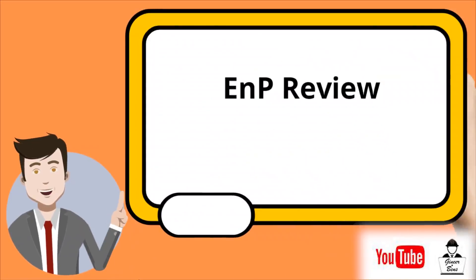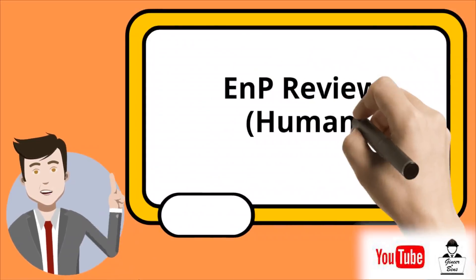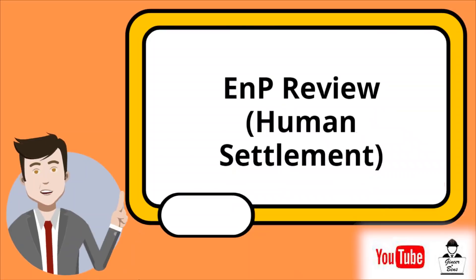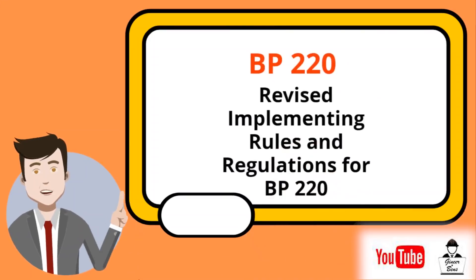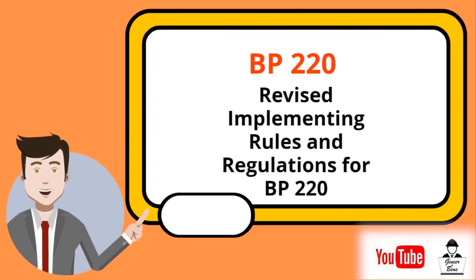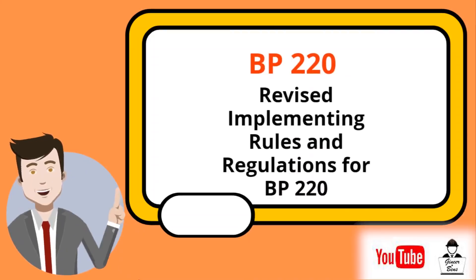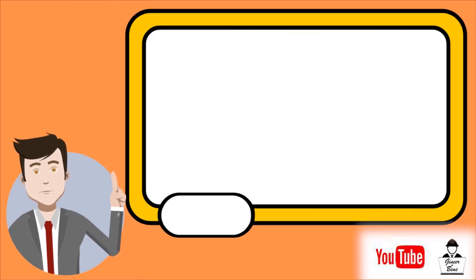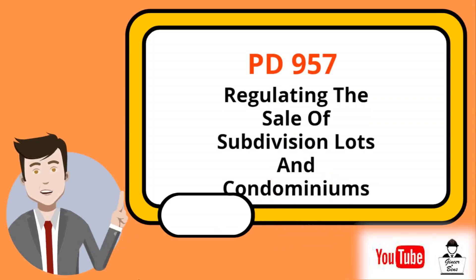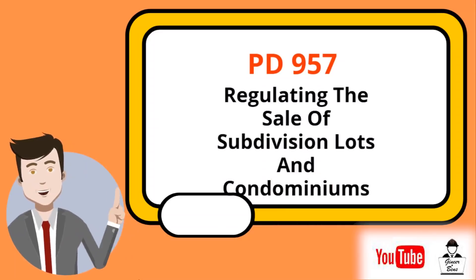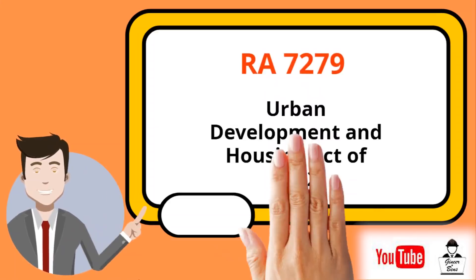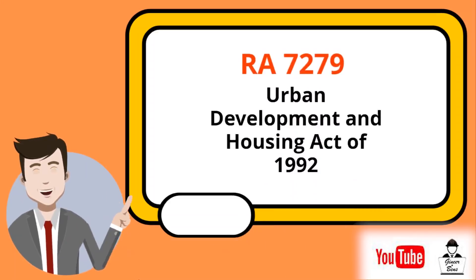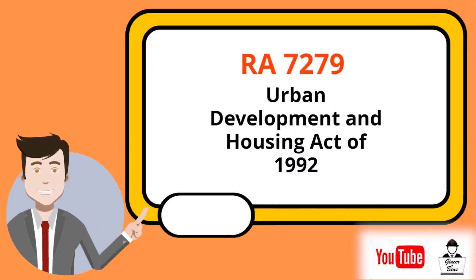ENP Review related to Human Settlement: BP 220, Revised Implementing Rules and Regulations for BP 220; P.D. 957, regulating the sales of subdivision lots and condominiums; and R.A. 7279, the Urban Development and Housing Act.